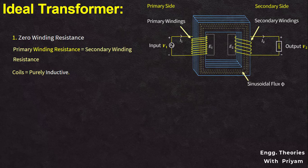The second characteristic of the ideal transformer is infinite permeability of the core. Infinite core permeability is a theoretical concept referring to a magnetic core that has no resistance to the flow of magnetic flux. It allows perfect coupling between the primary and secondary windings. In reality, no material has infinite core permeability; however, materials such as iron and steel have very high permeabilities, providing a close approximation in some applications.